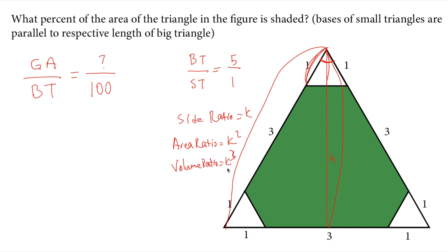We'll be using this area ratio fact in this question. We know that the ratio k is 5, so the area of the big triangle ABT to the area of the small triangle should be 25 over 1, which is the square of both values.